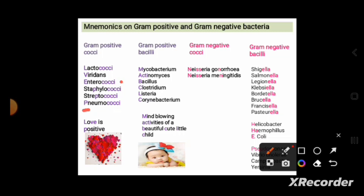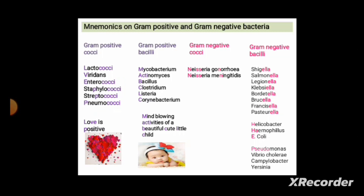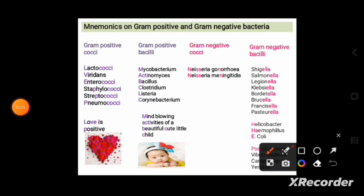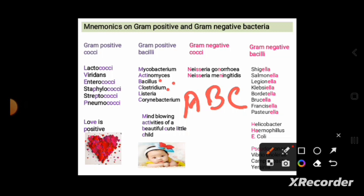Now let's discuss how to remember gram-positive bacilli. To remember gram-positive bacilli, remember A-B-C: A for Actinomyces, B for Bacillus, and C for Clostridium. There are also some important gram-positive bacilli: Mycobacterium, Listeria, and Corynebacterium.